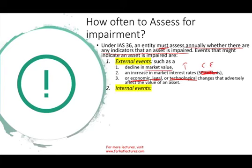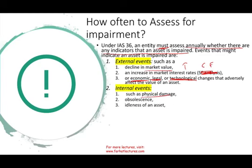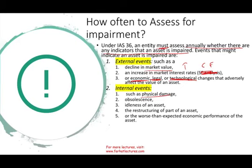There are also some internal events to look at, such as physical damage — if your asset is damaged due to an accident or employee error, it's impaired. Obsolescence: the asset is still physically good but from a production perspective it's not as useful — especially important for technology, like old software that's been superseded. Idleness of an asset: if you're not using it or using it less than you should, ask yourself if it's impaired. Restructuring of use, worse-than-expected economic performance — if you thought the asset would produce a million units but it can only produce 600,000, the asset is impaired.